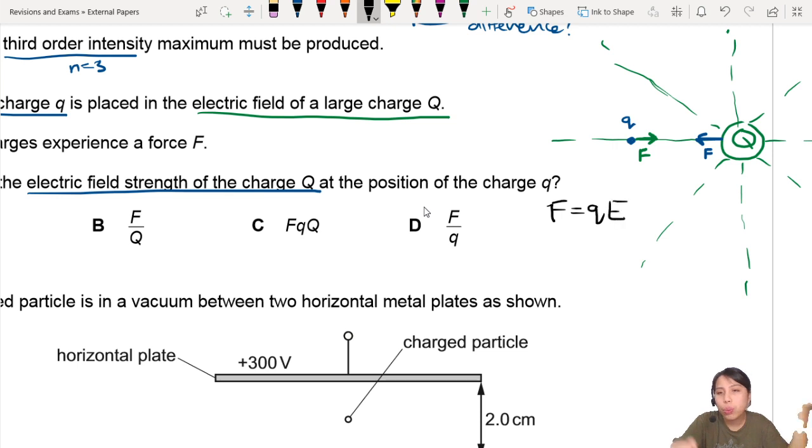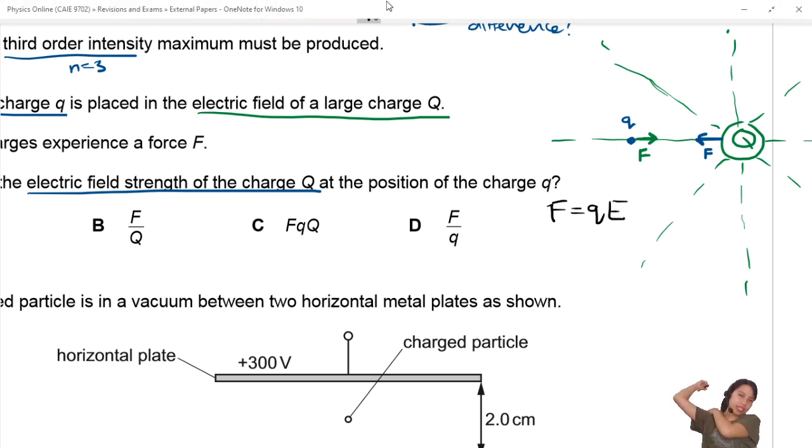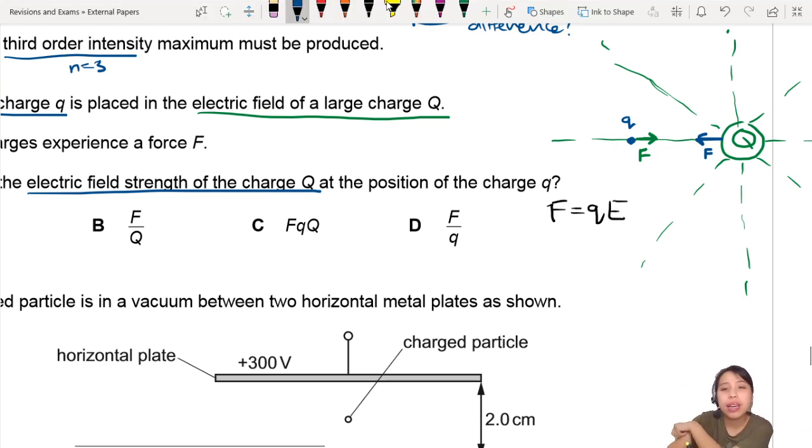F equals QE. But which F, which Q, which E? Here is why I color code this thing. So the force is the same either way. They both experience the same force. Which Q do you use? This Q is the test charge, force acting on the charge. So we're going to use a small blue q. Now, the E will be... Why is there a force acting on the blue q? Because it is sitting in the green field of the big charge. So this is the green electric field where the charge particle is in.